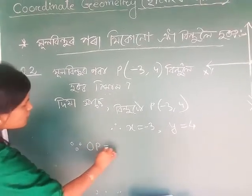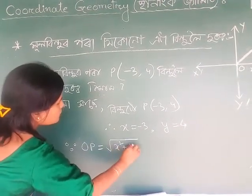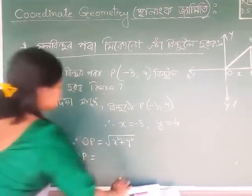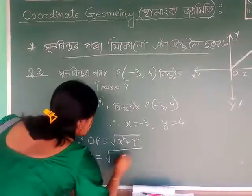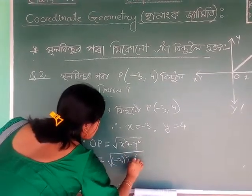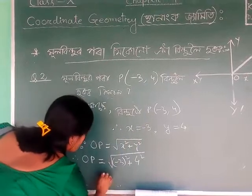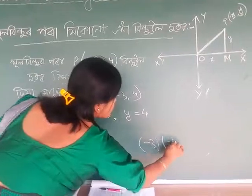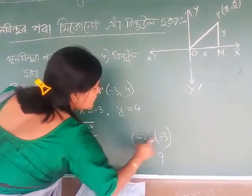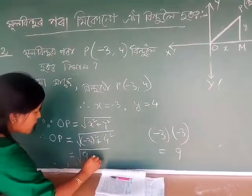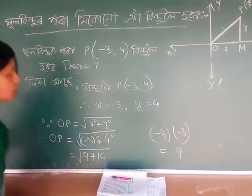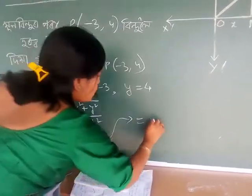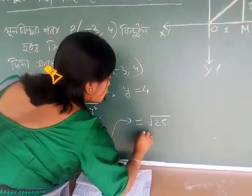OP equal to root over x square plus y square — equal to root of minus three squared plus four squared. Minus three into minus three equals nine. Nine plus nine equal to five — equal to 5.